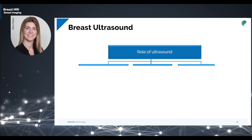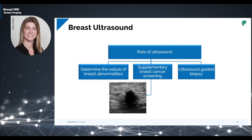Breast ultrasound is used as a supplementary breast cancer screening modality. Even though mammography is the most important tool for early detection of breast cancer, it does not detect all kinds of cancer. Some patients have breast tissues which contain a higher density of glands, fibrous tissues, and ducts, but less fat. These types of breasts may contain lesions that may not appear on a mammogram. Many studies show that breast ultrasound is a supplementary screening tool useful in detecting lesions that are not detectable in a conventional mammogram.